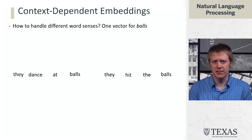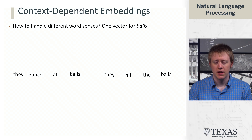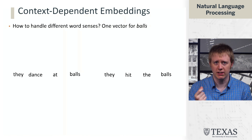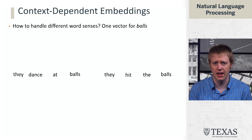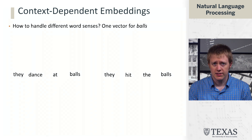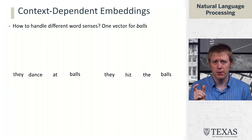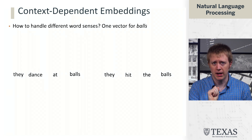In these two sentences — 'they dance at balls' and 'they hit the balls' — we have two different word senses of 'balls': somewhere that you dance versus a round object. In a word2vec style word embedding we'll only keep track of one vector for 'balls.' People have explored various ways of splitting things out by word senses, but a lot of these techniques don't really scale and don't necessarily work that well. Instead, what we'd like is for the representation of 'ball' to be informed by its context.